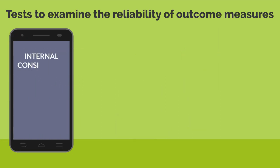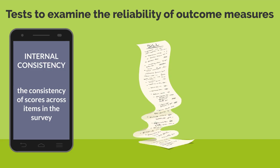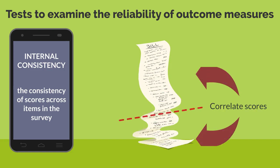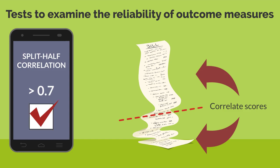Another test examines internal consistency, which indexes the consistency of symptom scores across items in the survey. To measure this, items on the survey are split in two and scores on the first half are correlated with scores on the second half, which is called split-half correlation. A correlation of over positive 0.7 is considered acceptable reliability.